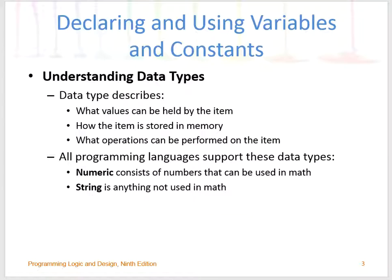As we learned from Chapter 1, data items include all the texts and numbers, but when we input data items to be used in the program, they're stored in memory where you could process them and convert them. To do that, we should be able to work with data in different types — two categories: numeric and string.